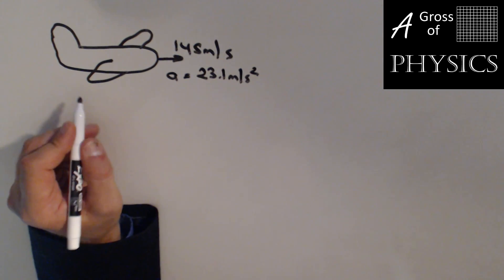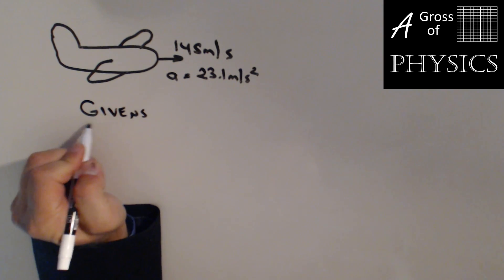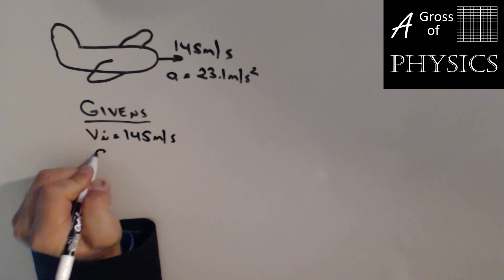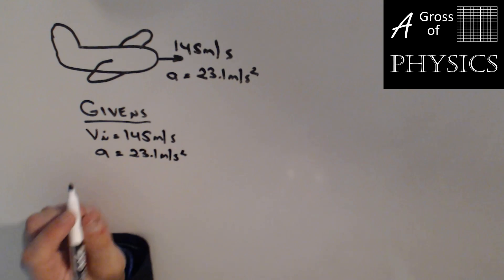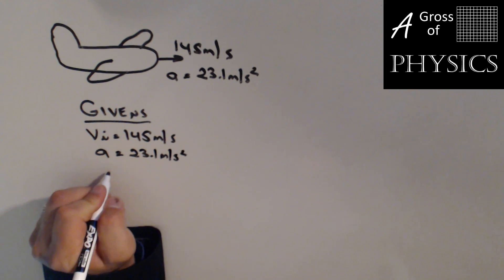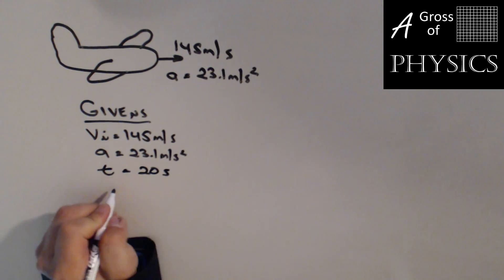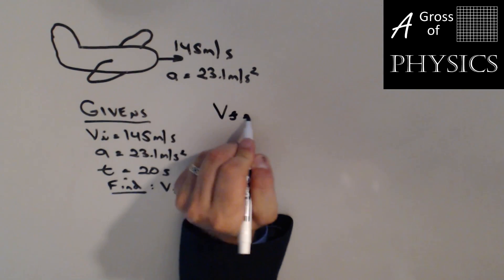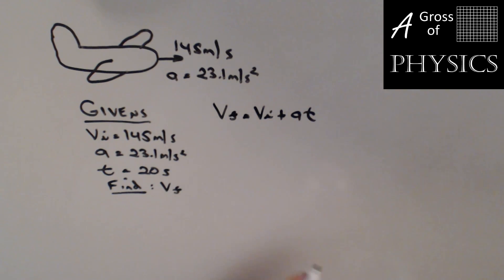So what we're going to do is start with a givens list. I'll write givens out. VI is 145. A is 23.1. And it also says there's a T for 20 seconds. We then want to find final velocity, so we're going to use VF as our symbol. Now we have VF as our unknown, VI, A, and T are our known values. So what we need to do is find an equation that matches the variables that we have and the variable we need. Looking on the chart, equation three is the one that fits the bill.